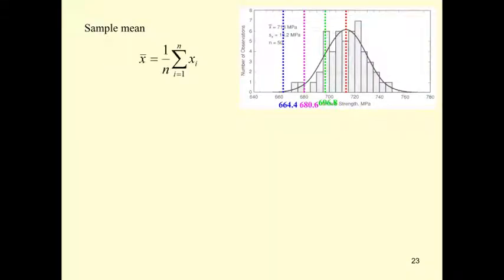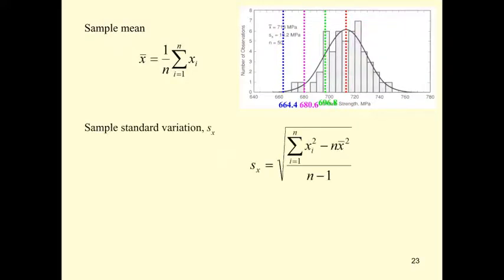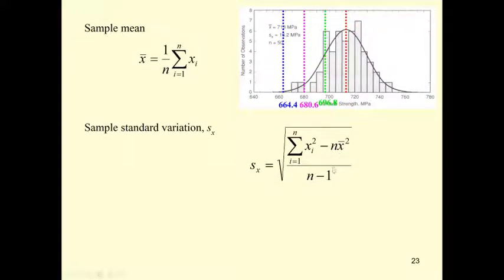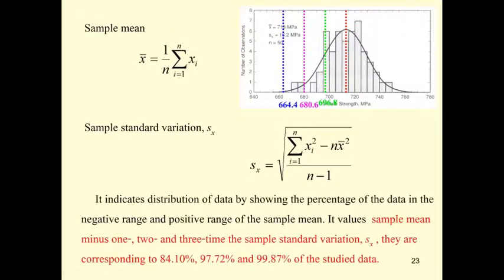How to compute the sample mean? You just sum all the values together and divide by the number of specimens. For the standard deviation, you square each value and sum them, then subtract the number of specimens times the mean squared, divide by the number of specimens minus one, and take the square root.